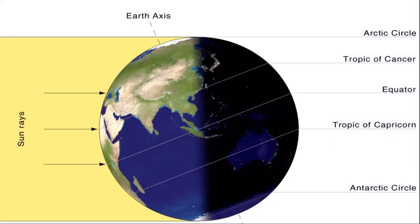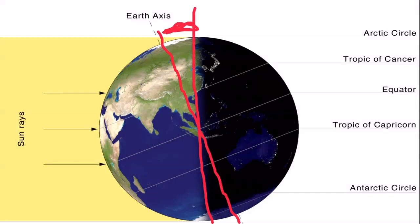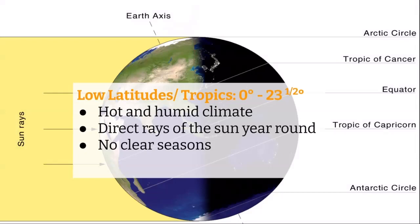The Earth is tilted on this axis at 23 and a half degrees — so the space between the axis and the north pole would be 23 and a half degrees. The low latitudes are the tropics, from zero to 23 and a half degrees. It's hot and humid here — you get direct rays of the sun year round and no clear seasons. You might have pants or a light jacket, but for the most part this is shorts and sandals weather.